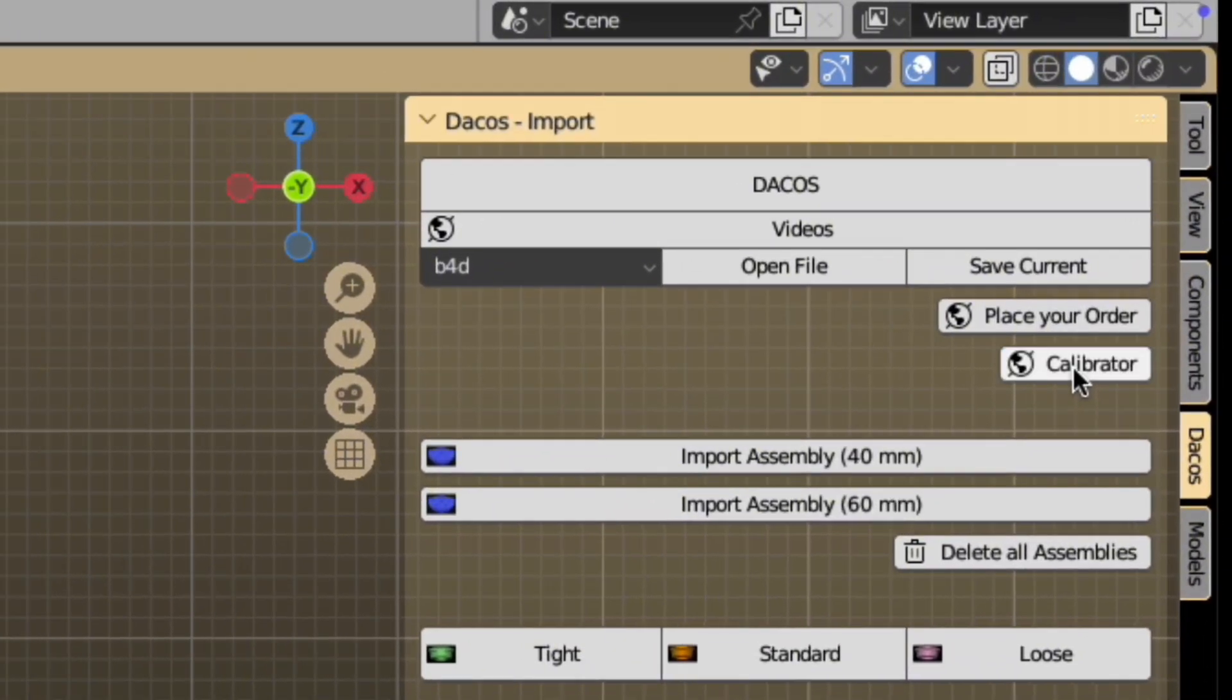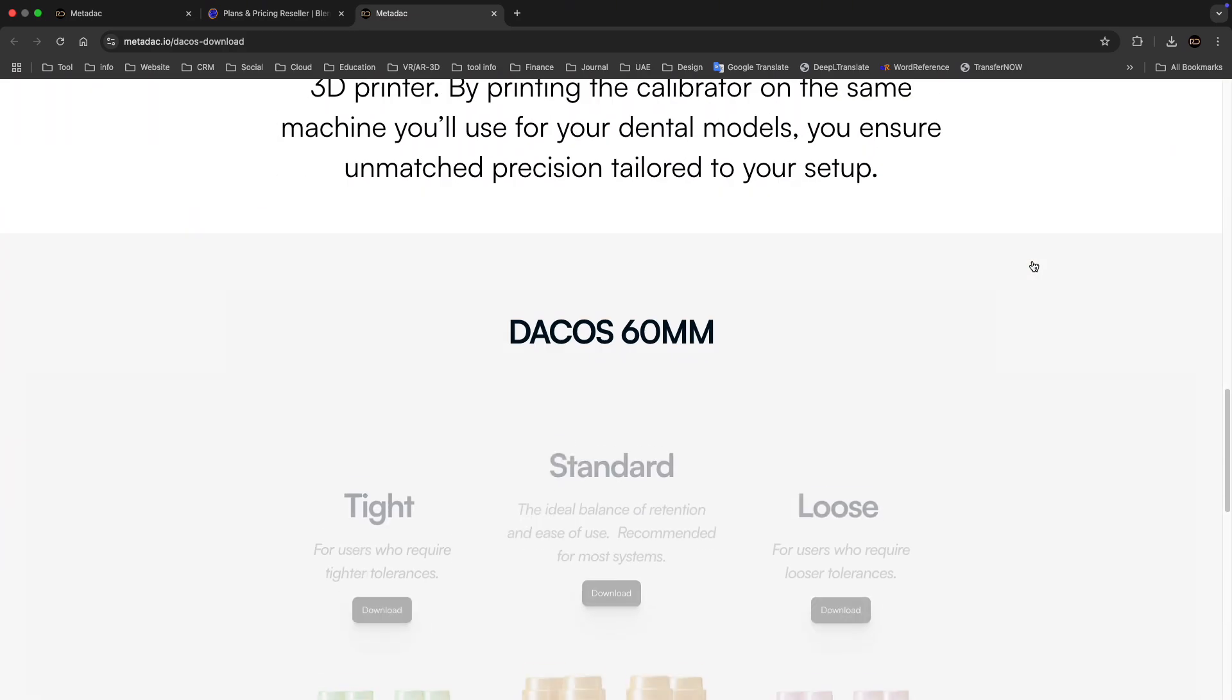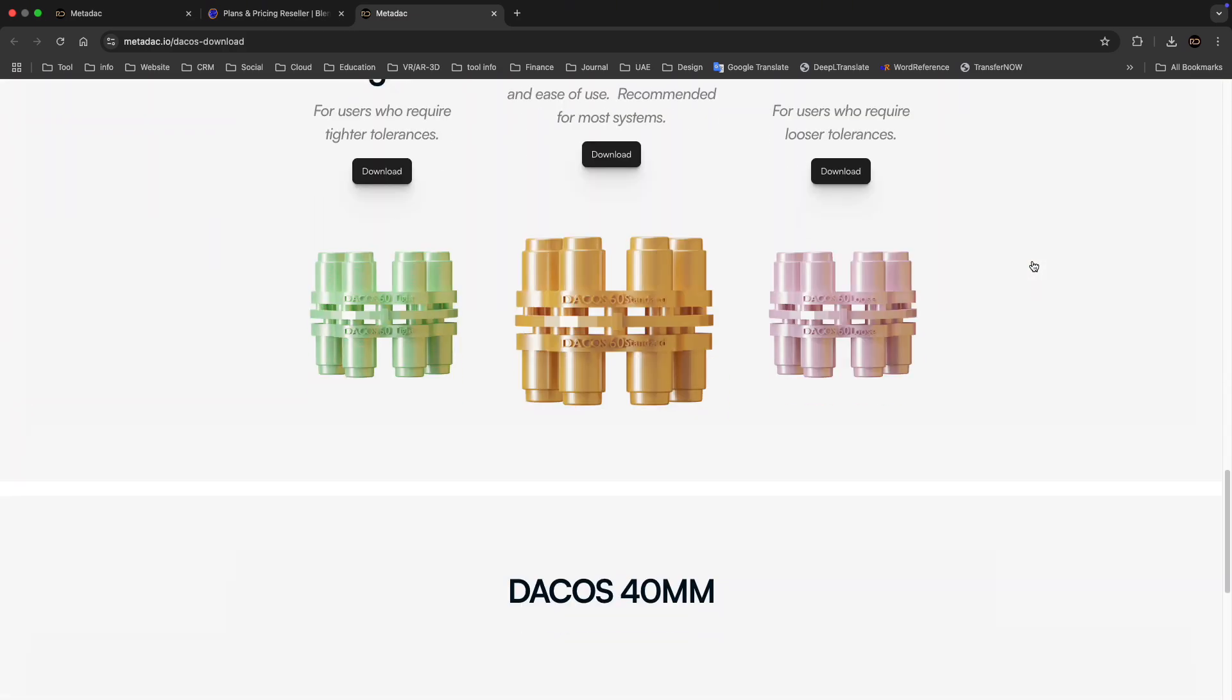You will find a button directly on the software, and you can choose from three different offsets: tight, standard, and loose. It is recommended to use the standard offset.